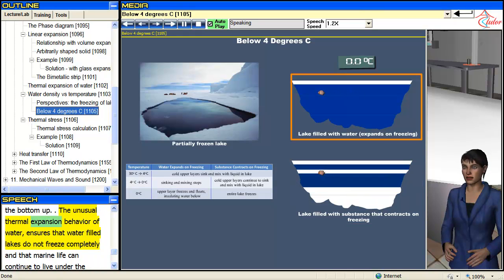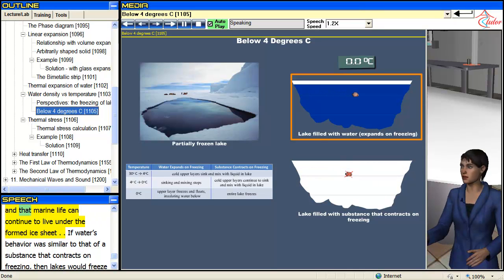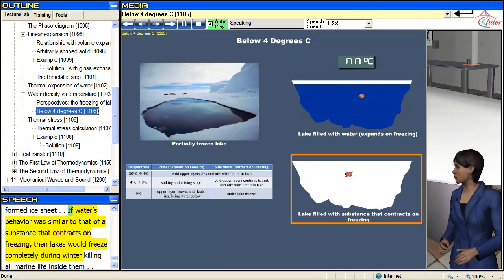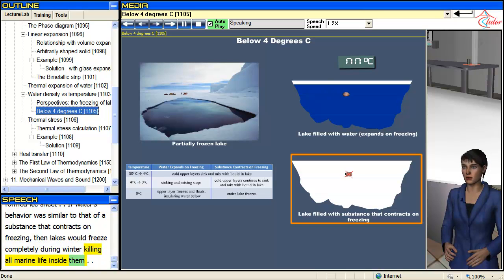The unusual thermal expansion behavior of water ensures that water filled lakes do not freeze completely, and that marine life can continue to live under the formed ice sheet. If water's behavior was similar to that of a substance that contracts on freezing, then lakes would freeze completely during winter, killing all marine life inside them.